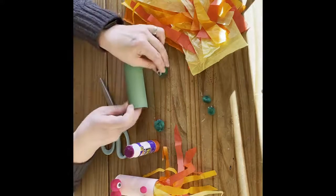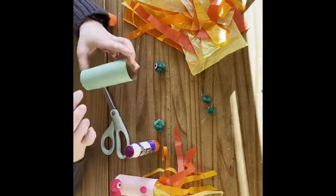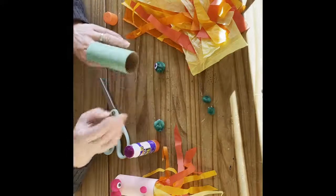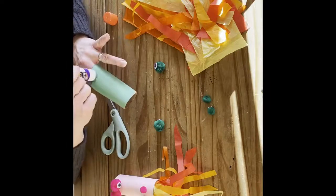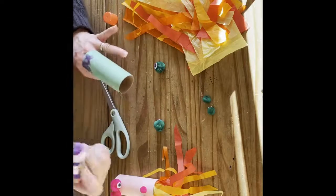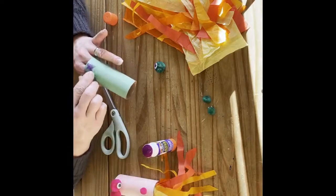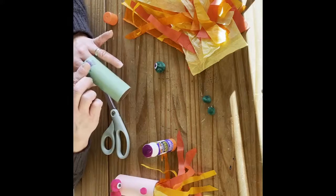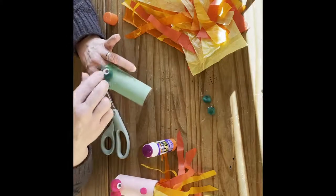And then we'll add the eyes. I'm going to keep this seam on the bottom, so we'll put the eyes up here. We're going to add some glue. Now, this glue will dry clear, so I don't really care. I'm going to add a lot because I want this pom-pom to stick on here. I'm going to slide that on and put that one on just like that.